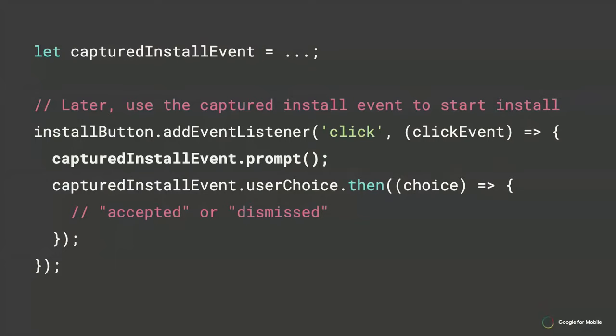Assume you have a UI element called installButton that you'll display when install is available — this element should be hidden until install is ready, then set installButton.hidden to false to make it visible. Capture a reference to the install event so that when the user clicks the install button, you can call prompt() on it. If you want to wait until the user has completed a key part of their journey before presenting the install UI, use that saved reference to let the user call the prompt method at the right moment.